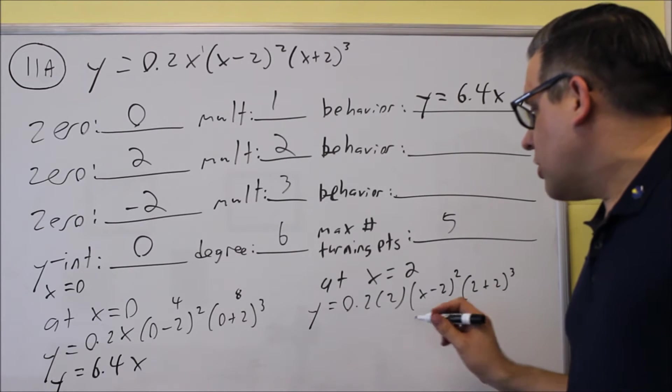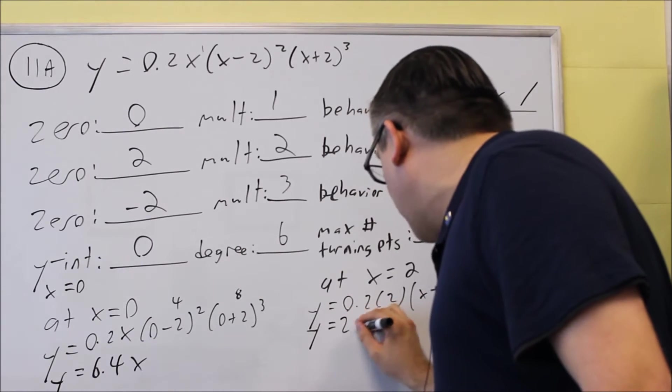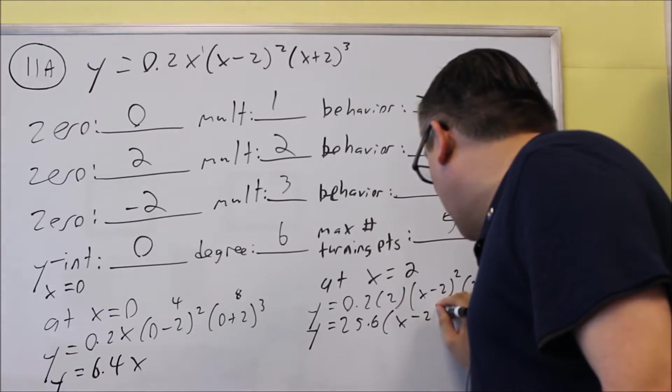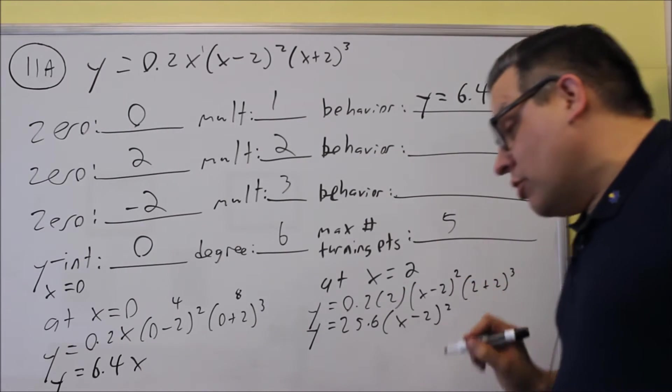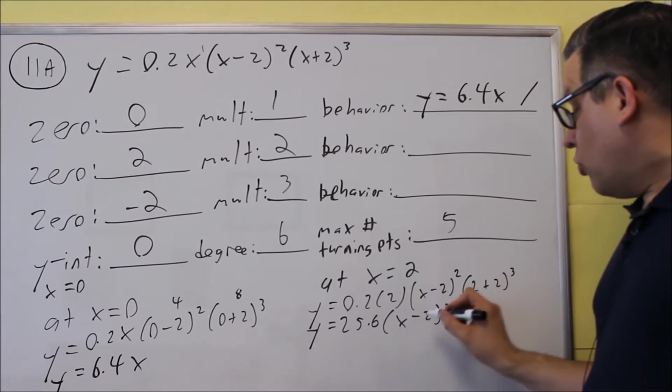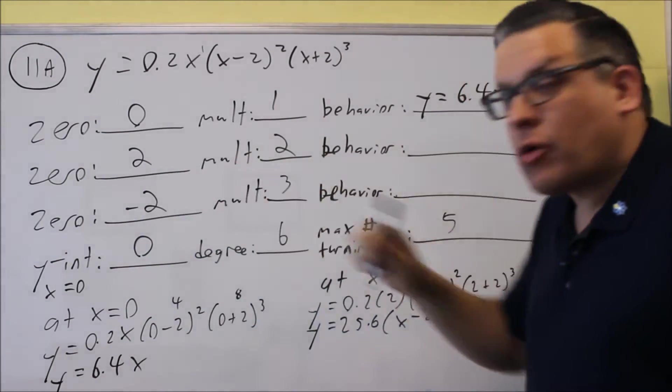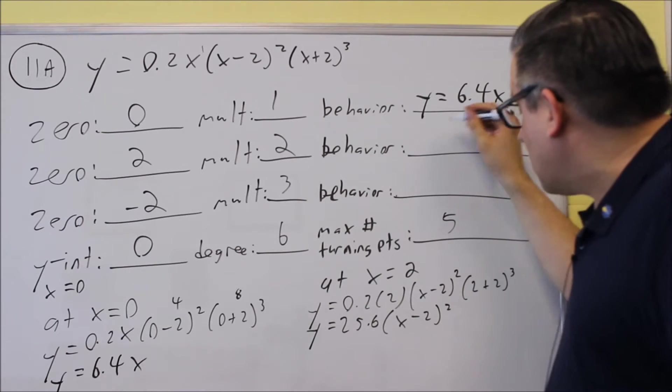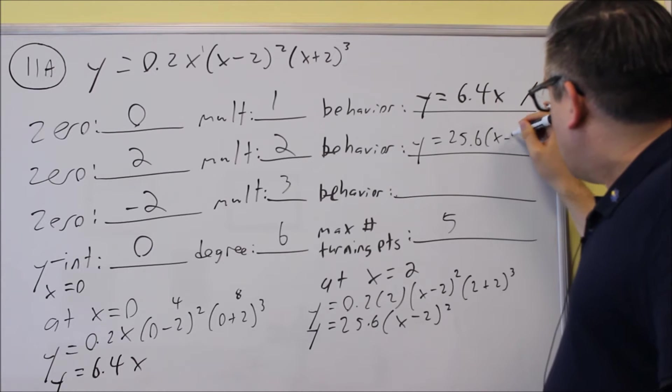And so when you get done doing all that and multiply it out, what you're going to get is 25.6, and we have (x-2) squared. That's what you get when you multiply all that out. So this right here would be the behavior equation that this will look like when it crosses the x-axis at 2, so I'm going to put that in there, 25.6(x-2) squared.